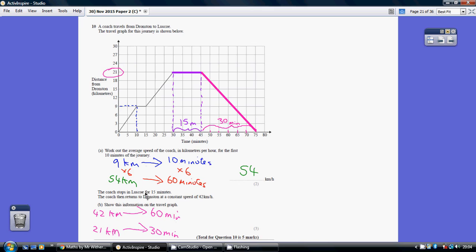Right, the coach stops for 15 minutes. So this is where it stops. For 15 minutes it travels no further distance from Dronston. So 15 minutes, well that takes us from 30 minutes to 45. So we have a horizontal line for 3 squares.